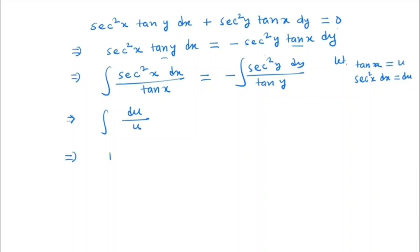So it will be ln u, which is ln tan x. Similarly, the only difference here is y and x, so here it will also equal ln tan y because we have the same function on both sides.